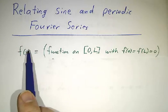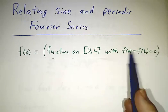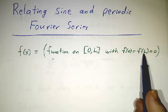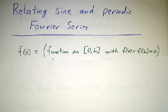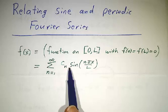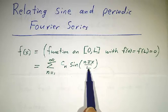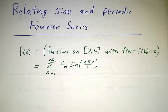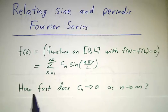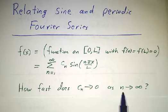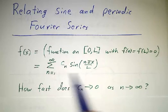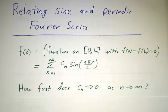Let's suppose we have a function on the interval 0 to L, and the two ends are tacked down, f(0) and f(L) are both 0, and we want to expand that as a sum of sine functions, sum of c_n sine(nπx/L). The basic question is how quickly does c_n go to 0 as n goes to infinity? Or in other words, how many terms are we going to need to get a good approximation to f?